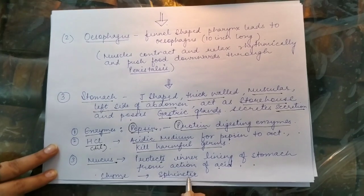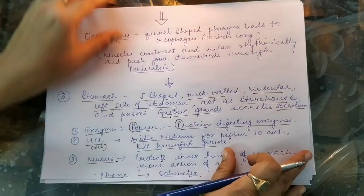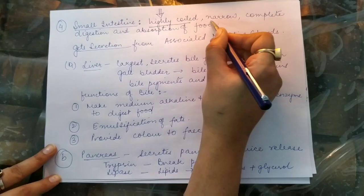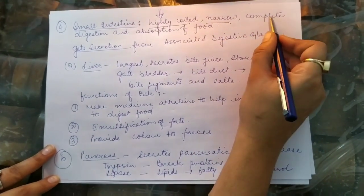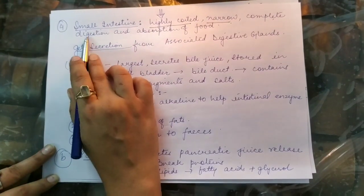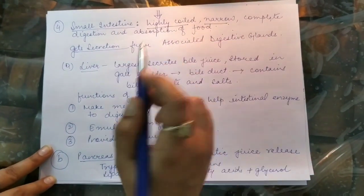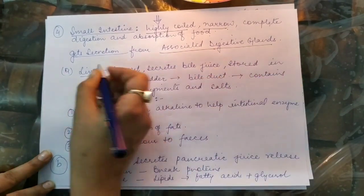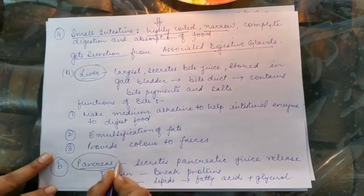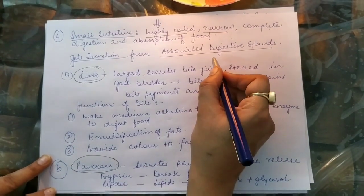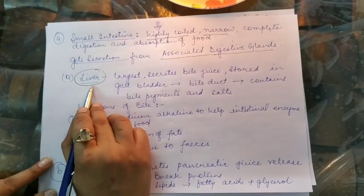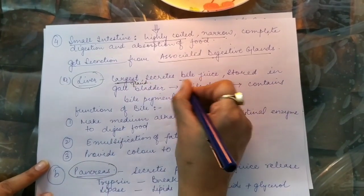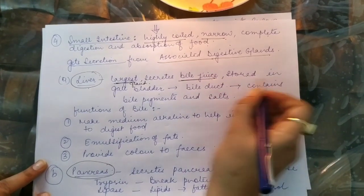The semi-digested food, now called chyme, is passed through a sphincter to the next organ — the small intestine. The small intestine is a highly coiled narrow structure where complete digestion and absorption of food takes place. The small intestine receives secretions from associated digestive glands including the liver and pancreas, as well as from the intestinal glands present in the small intestine. The liver is the largest gland of the body and secretes bile juice, which is stored in the gallbladder.